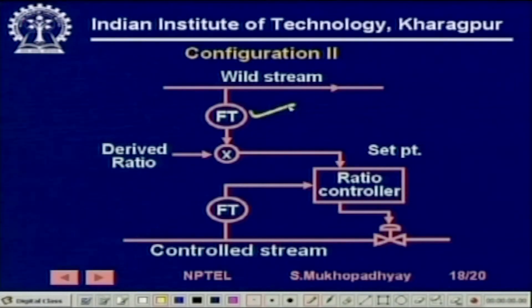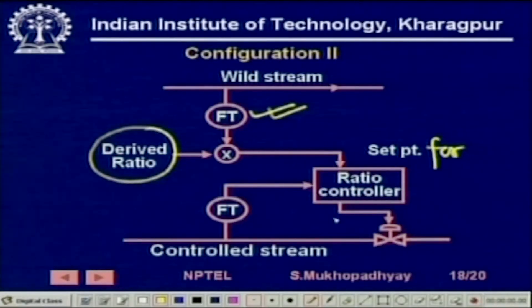There is another way by which you could do it. In this configuration, you are providing the set point from the wild stream. You measure the flow rate in the wild stream and multiply by the desired ratio to get how much of the controlled stream material should come. In that sense it is a set point for the flow rate of the controlled stream, and then it is a usual feedback control. You could do it in either manner and get the ratio.